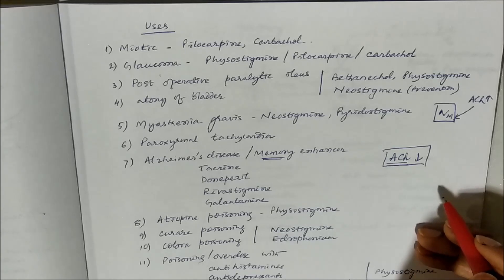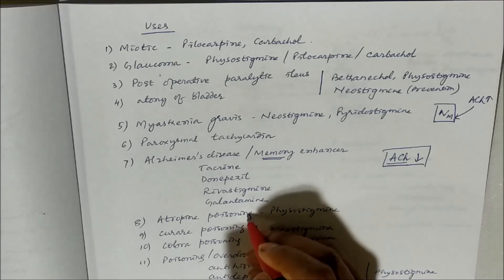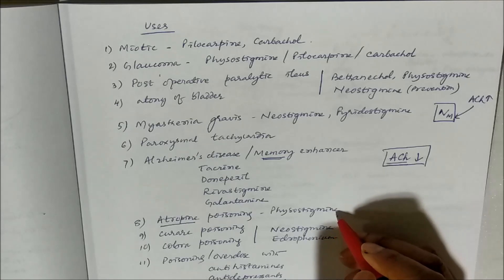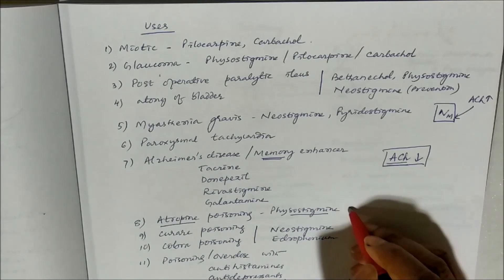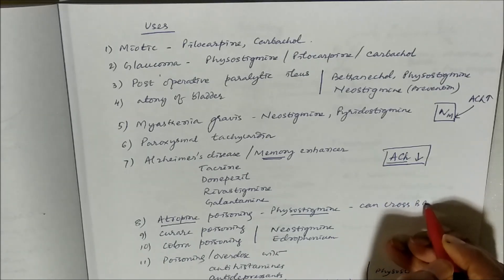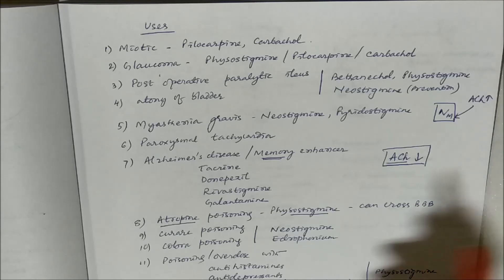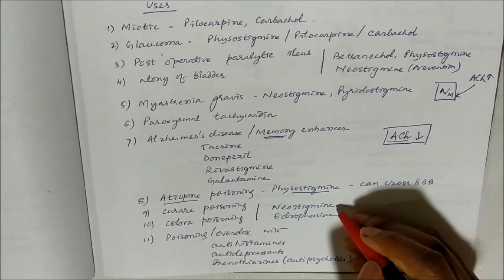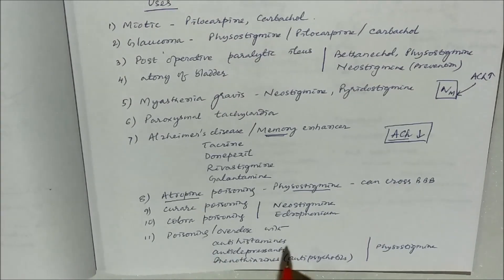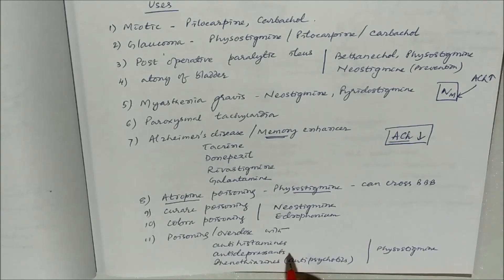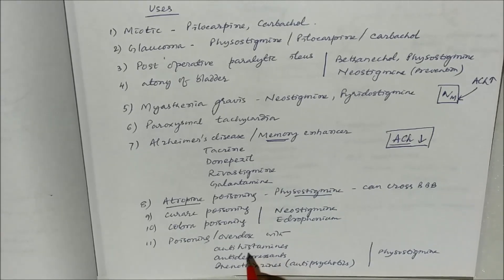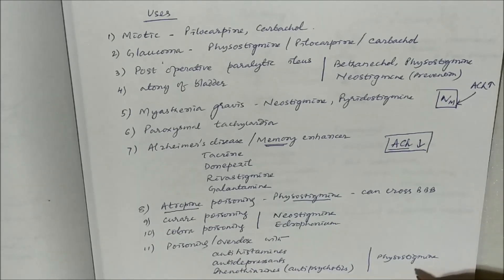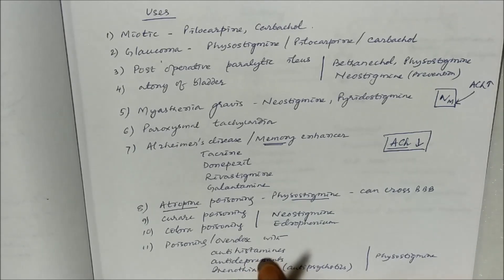These drugs can also be used in several poisonings. First, in atropine poisoning - atropine is an anticholinergic drug, so its opposite action can be counteracted by physostigmine. Physostigmine is used because it can cross the blood-brain barrier, so the CNS actions of atropine can be counteracted. They can also be used in curare poisoning and cobra poisoning due to neurotoxins - drugs like neostigmine and atropine can be used. Finally, overdose with drugs that have anticholinergic side effects, like antihistaminics, antidepressants, and antipsychotics like phenothiazines, can be countered using anticholinesterases like physostigmine.